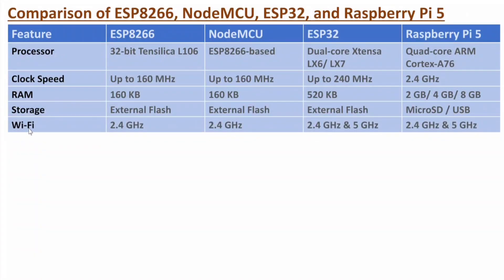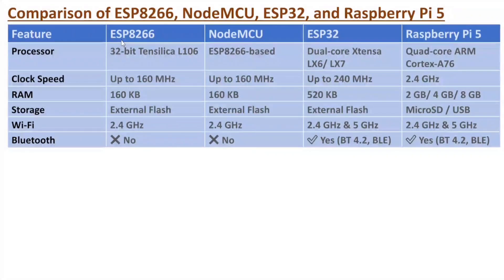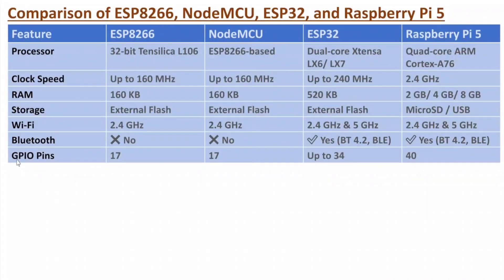If you talk about Wi-Fi, ESP8266 and NodeMCU have single-band Wi-Fi at 2.4 GHz, while ESP32 and Raspberry Pi 5 both have dual-band Wi-Fi at 2.4 and 5 GHz. Regarding Bluetooth, it is not available with ESP8266 and NodeMCU. It is available with ESP32 and Raspberry Pi 5, with two options: classic Bluetooth and low-power Bluetooth. For general IO pins, ESP8266 and NodeMCU have 17 GPIO pins, ESP32 has up to 34, and Raspberry Pi 5 has 40 IO pins.